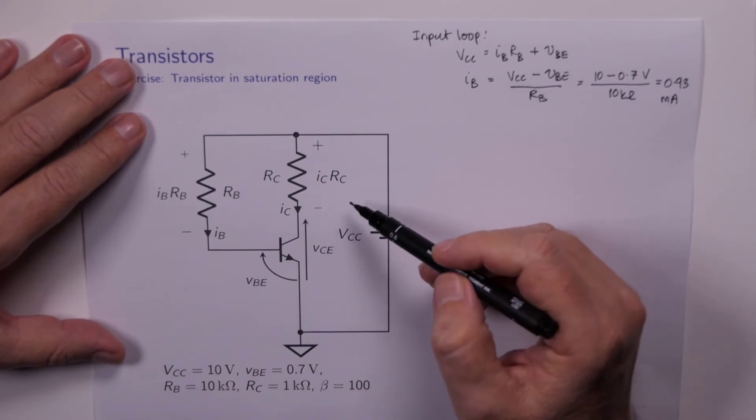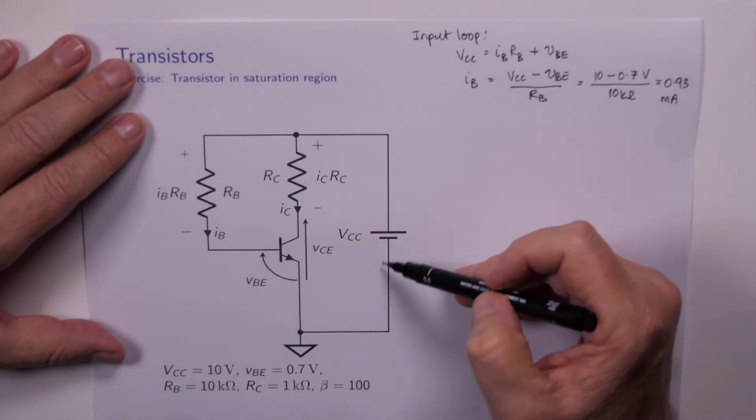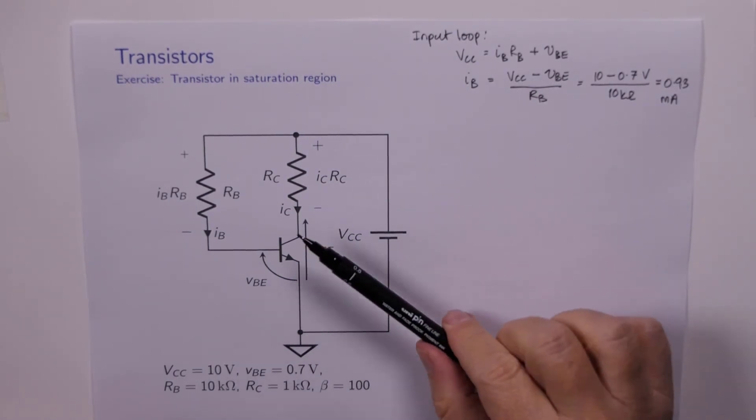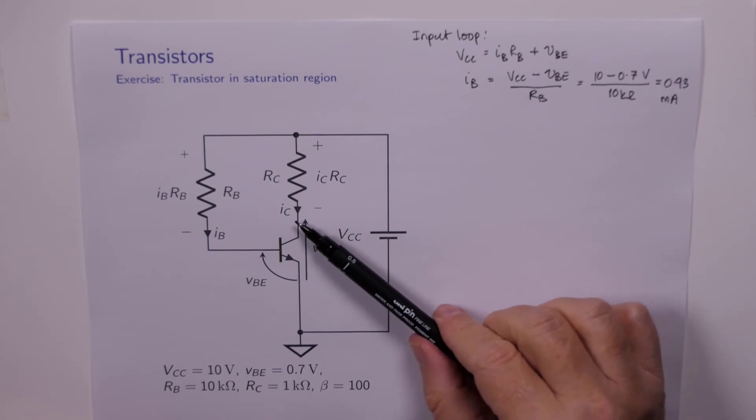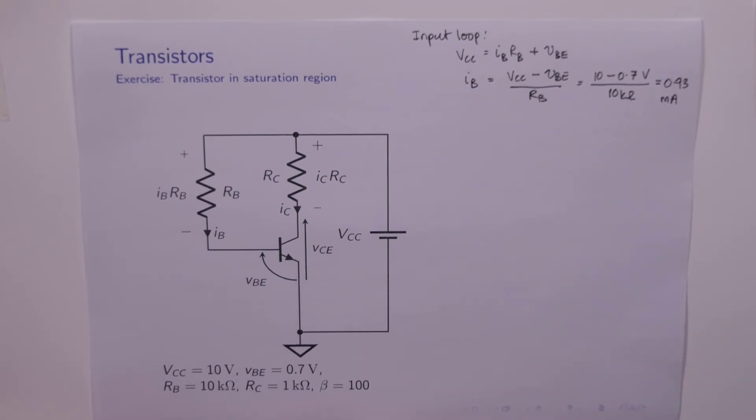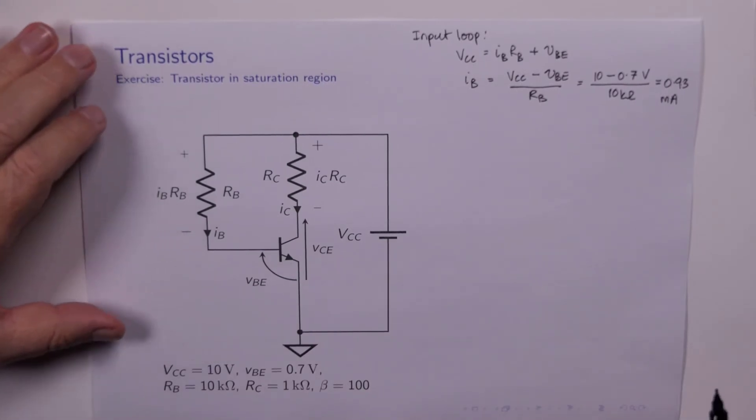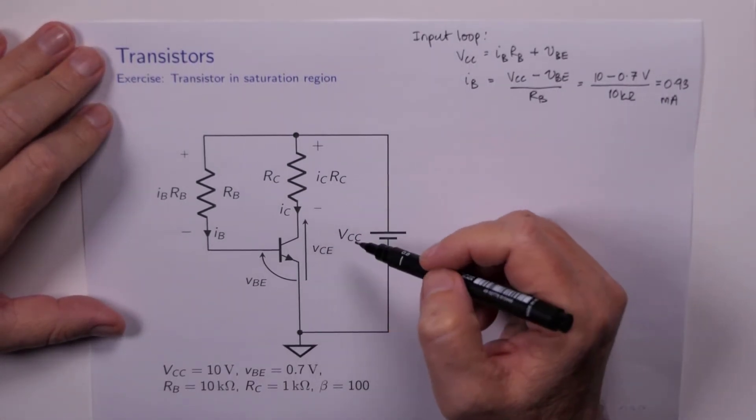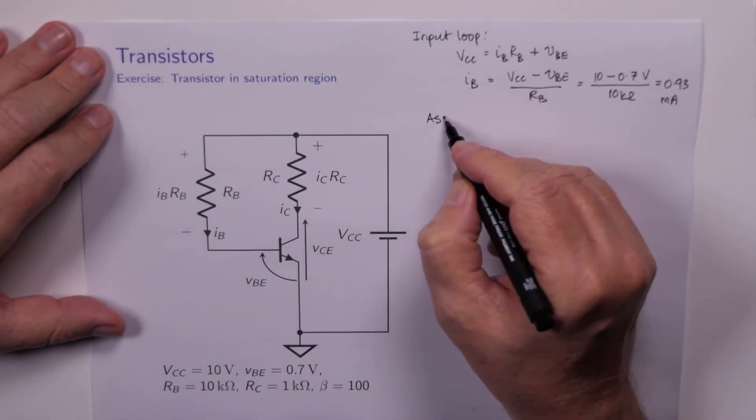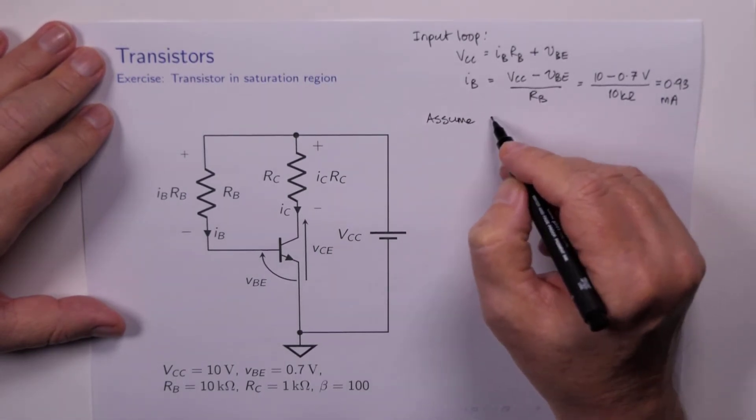Now the next thing to do is to work out what's happening in the output loop. But we can't really decide what to do. We're going to have to make an assumption. Do we assume that the transistor is in the saturation region or the active region? I always go for the active region.